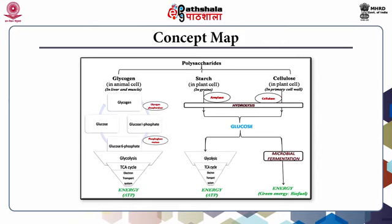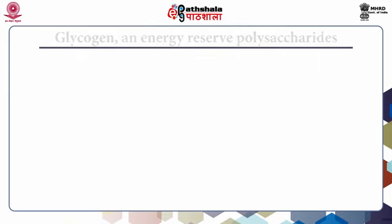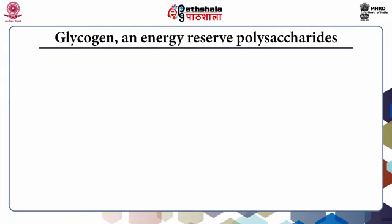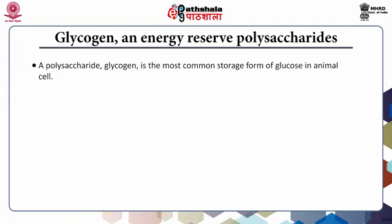This slide shows the concept map of this module. Polysaccharides can be broadly divided into glycogen, starch, and cellulose, where glycogen is an animal-related polysaccharide, while starch and cellulose are mostly found in plants. The concept map shows the mechanism by which these are produced and how they lead to the production of energy in the body.